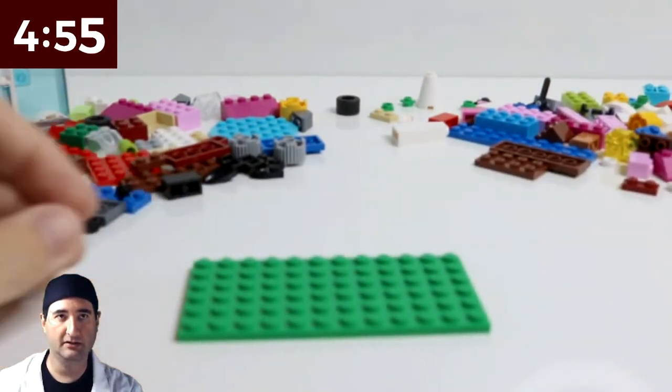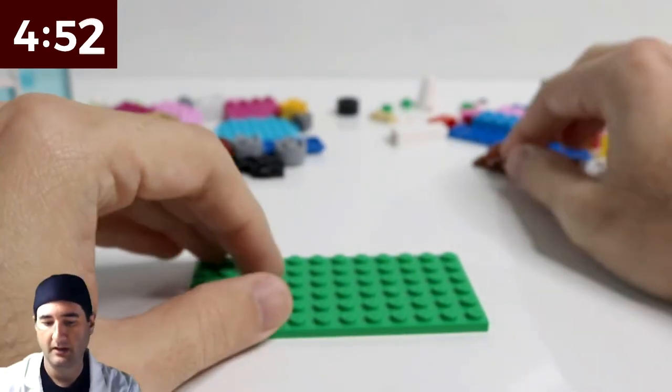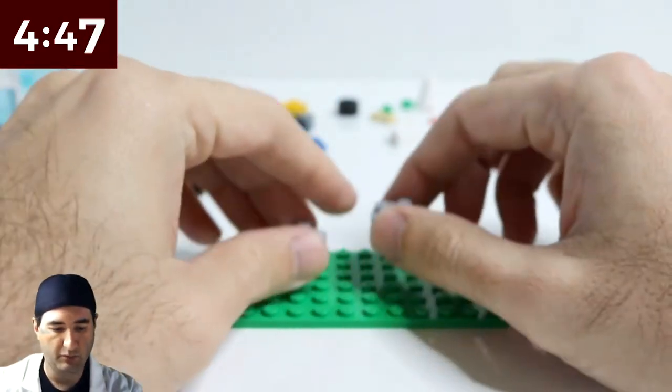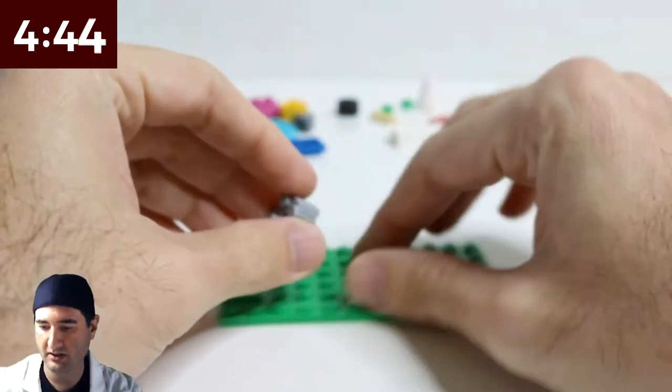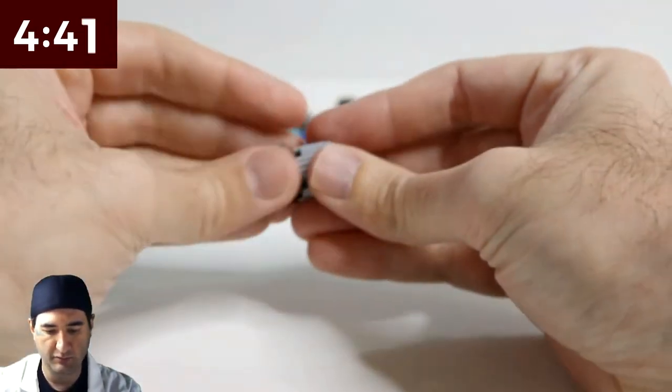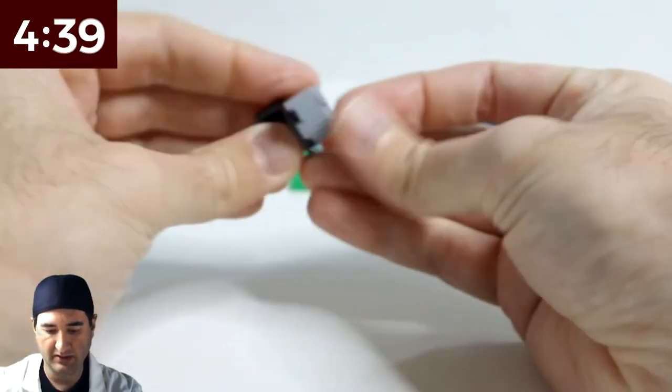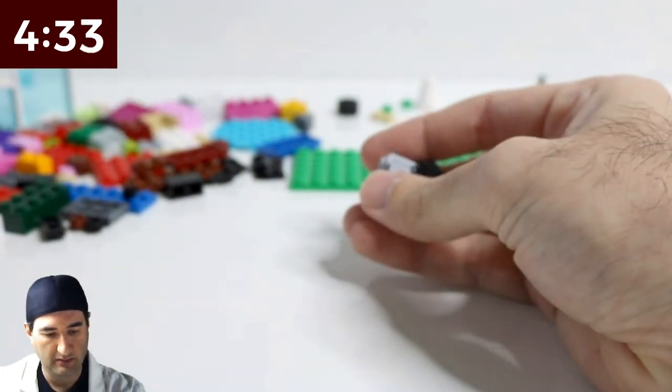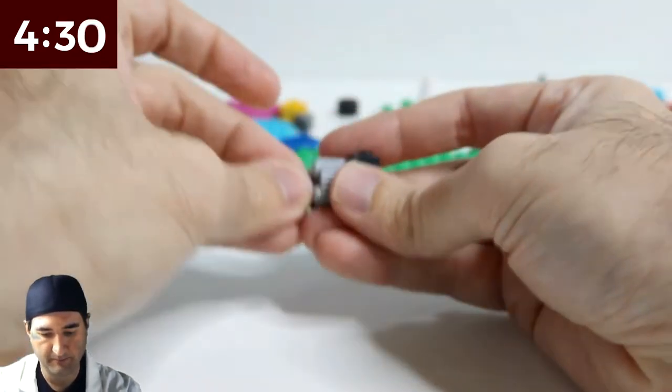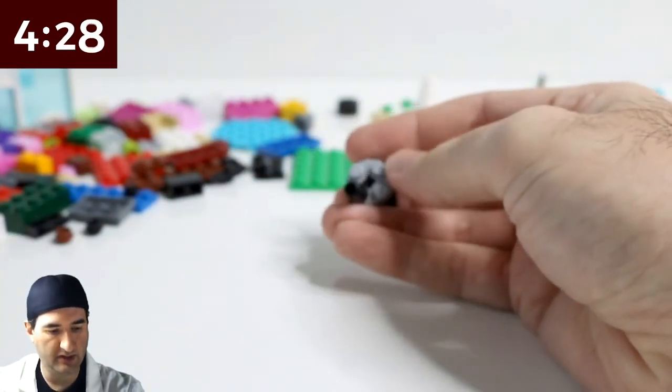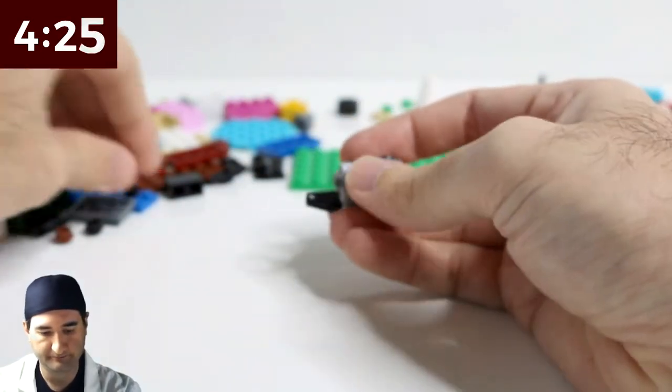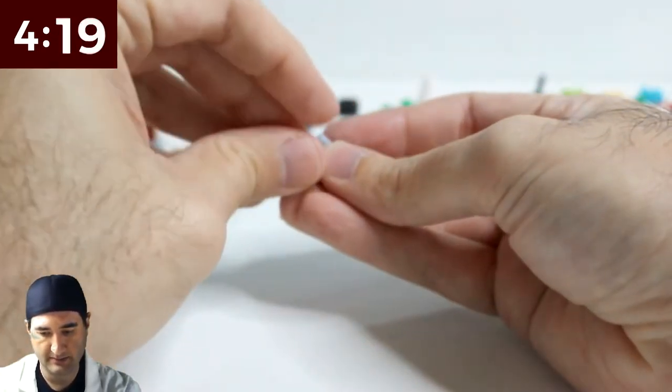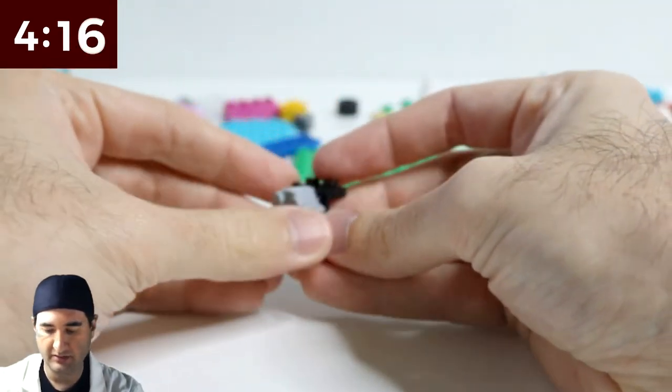So let's get started with this base plate here. And I'm not sure how we're going to do the legs, but maybe we won't concentrate on the legs. Maybe we should concentrate on the head first. When we're building animals, building the head typically is the hardest thing to do, and I think this might be actually pretty easy.